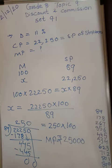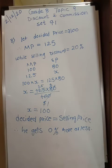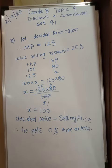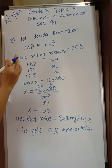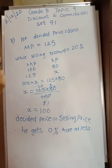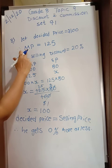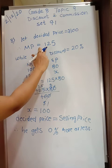Now let's do Problem 8, which is similar to Problem 4 on page 54. A shopkeeper decides to sell an item at a certain price and tags it by increasing the decided price by 25 percent. Let the decided price be 100. He increased by 25 percent, so 25 rupees is added, making the marked price 125.